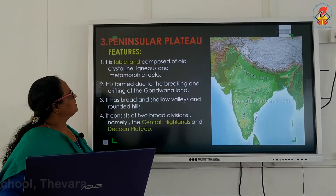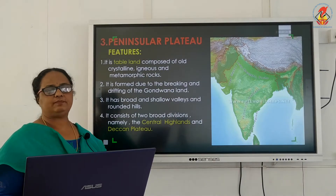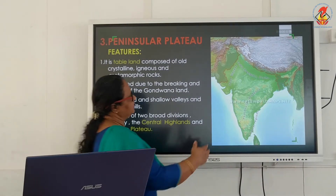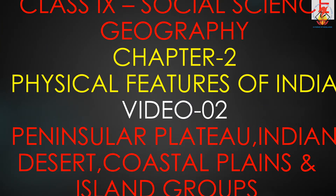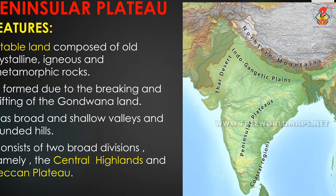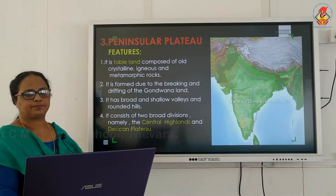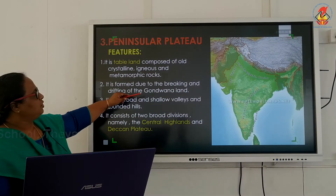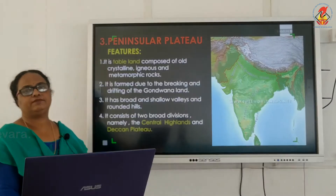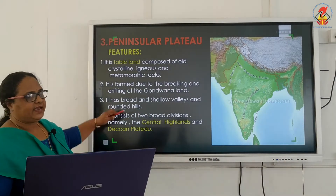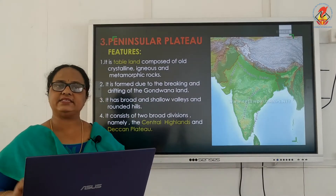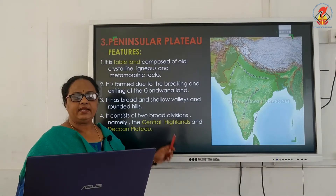The peninsular plateau is a tableland composed of old crystalline, igneous, and metamorphic rocks. It was formed due to the breaking and drifting of the Gondwana land, and it has broad and shallow valleys with rounded hills.